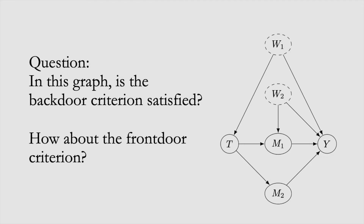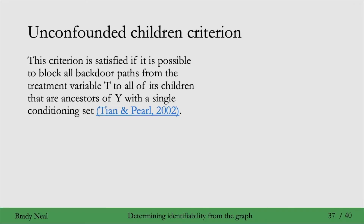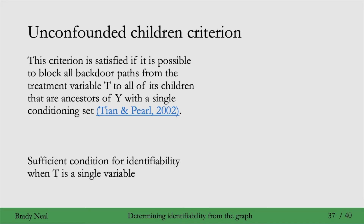The first more general criterion we'll consider is what we call the unconfounded children criterion. Consider a single treatment variable. This criterion is satisfied if it is possible to block all backdoor paths from the treatment variable t to all of its children that are ancestors of y with a single conditioning set. This is a sufficient condition for identifiability when there's a single treatment variable, and it generalizes the backdoor and frontdoor criterions.